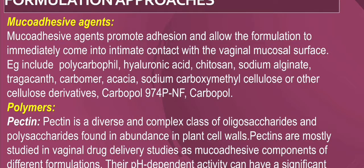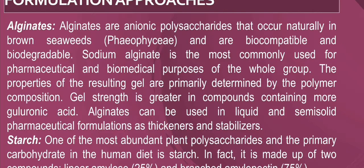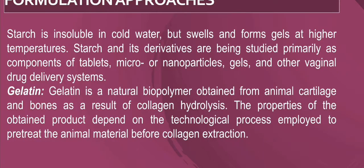There are different types of polymers used in vaginal drug delivery. Pectin is studied as a mucoadhesive component, and its pH-dependent activity has a significant impact on the drug release mechanism. Alginates are biocompatible and biodegradable, naturally occurring, and sodium alginate is most used for pharmaceutical purposes — used as thickeners and stabilizers in liquid and semi-solid formulations. Starch is the most abundant plant polysaccharide, made up of linear amylose and branched amylopectin, and is used for gel preparation as it swells at higher temperatures.